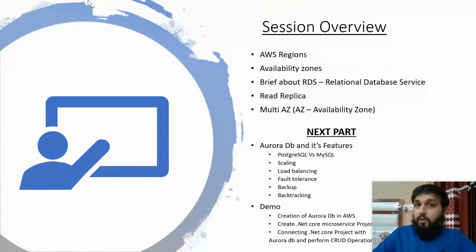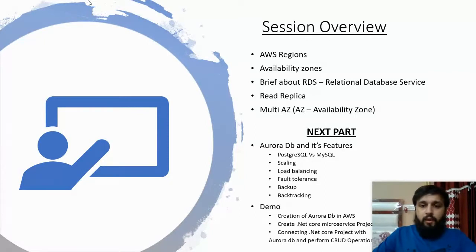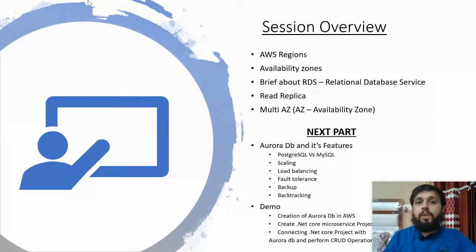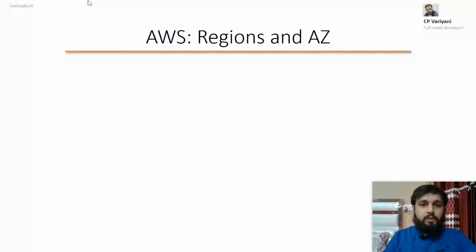I will not go into too much detail — I'll focus on practical as I always do in every video — but these concepts are really important, so I'm going to cover them. After that, in the next part, we'll see Aurora DB features: scaling, load balancing, fault tolerance, backup, backtracking, and other stuff. Then we'll do the demo where we'll create AWS Aurora DB, create a .NET Core microservice project, connect Amazon Aurora with Entity Framework code-first approach, and finally do CRUD operations: create, read, update, and delete.